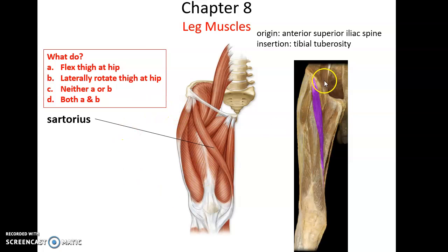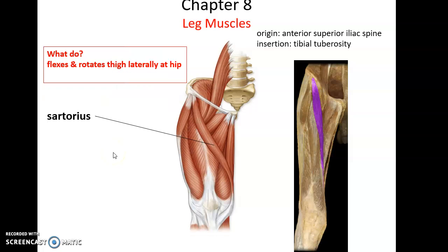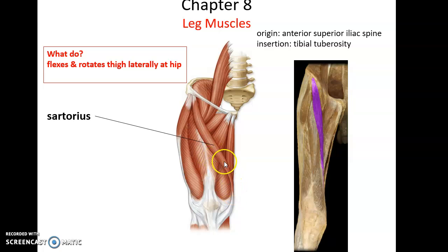The sartorius muscle is a thin strip of muscle crossing over the front of the thigh. It helps to flex the thigh — raising the thigh — and also helps to laterally rotate the thigh. Because it runs diagonally across, when it shortens it can pull the leg out laterally, producing lateral rotation.